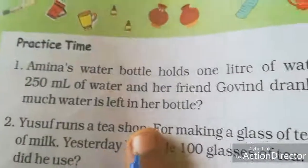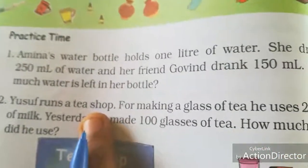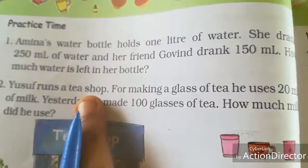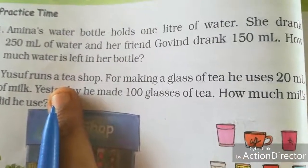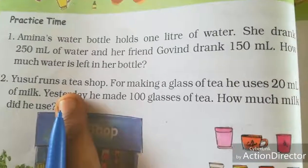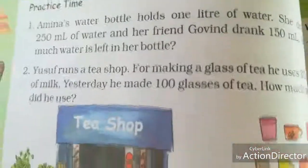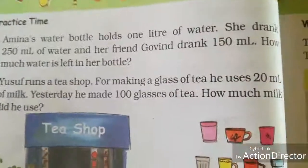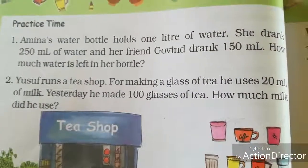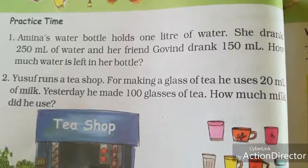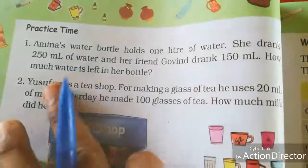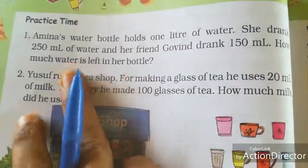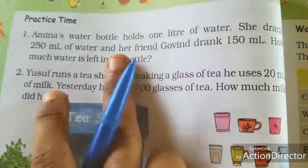Look at the next page — practice time. Amina's water bottle holds 1 liter of water. She drank 250 ml of water and her friend Govin drank 150 ml. How much water is left in her bottle? First, we want to add how much both of them consumed. We have to add both amounts they drank, then subtract from 1 liter.